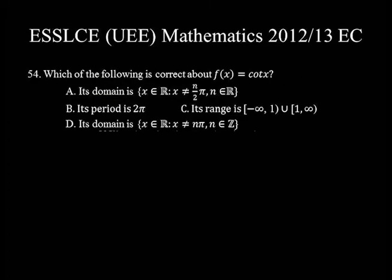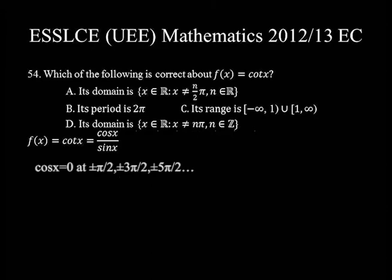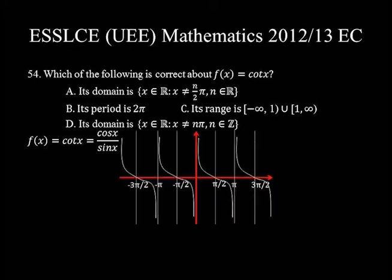Question number 54. Which of the following is correct about f(x) = cot x? It's important to draw the graph of a function for ease of replying to such questions. f(x) = cot x = cos x divided by sin x. Since sin x is at the denominator, sin x must not equal 0. The cot function is asymptotic to vertical lines drawn through those points that make sin x equal to 0. These points are 0, plus or minus pi, plus or minus 2 pi. Cosine x is at the numerator, so the graph crosses the x-axis where cos x equals 0. These points are plus or minus pi/2, plus or minus 3pi/2, plus or minus 5pi/2.